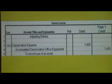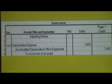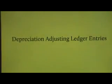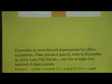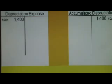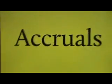Note that nowhere do you debit or credit the office equipment account when doing adjusting entries. Office equipment is always recorded at historical cost and the account is not credited until the asset is removed from the books at the end of its useful life. For the depreciation adjusting ledger entries, you will add one thousand four hundred to depreciation expense as a debit and credit accumulated depreciation one thousand four hundred.